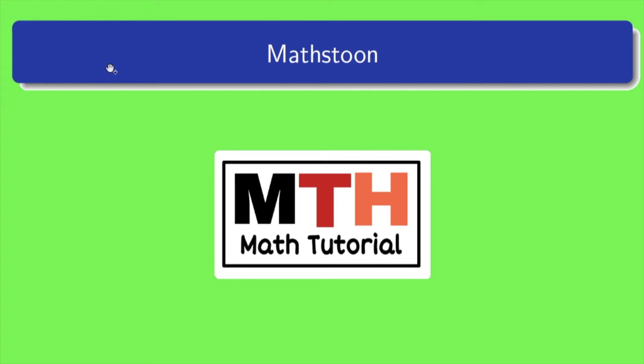Hi friends, welcome to Mathstoon. In this video we will learn to find the square root of a decimal number, which is square root of 0.16. For more about square roots, please visit mathstoon.com or check the link in the description box.